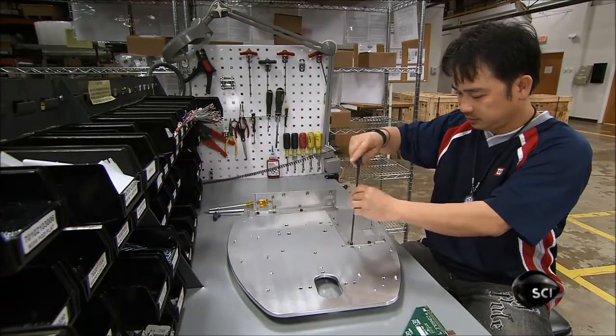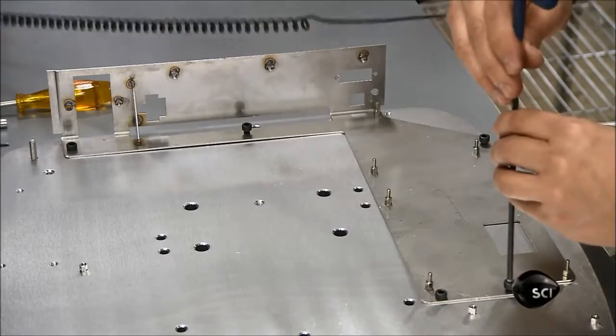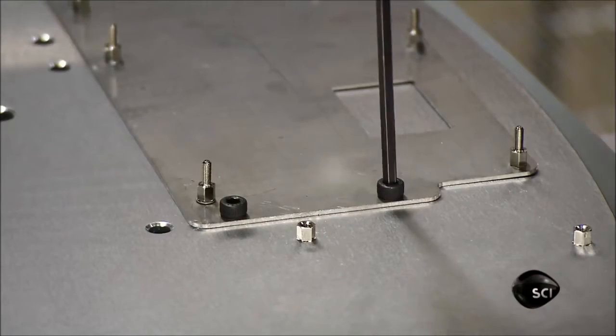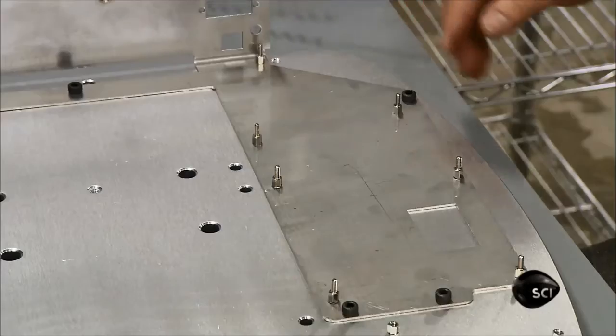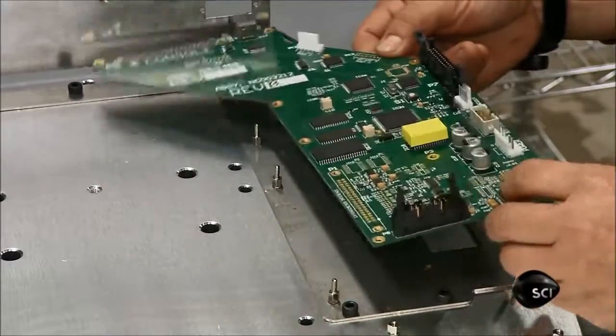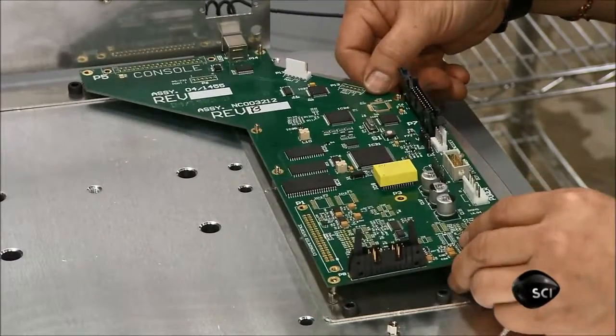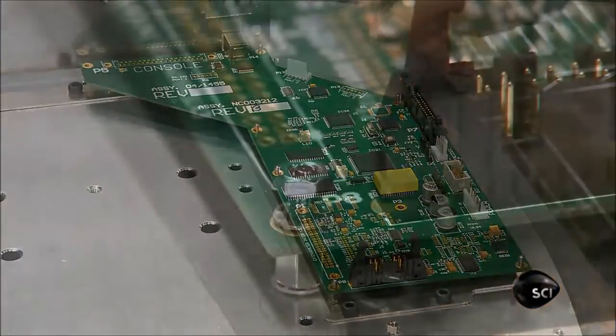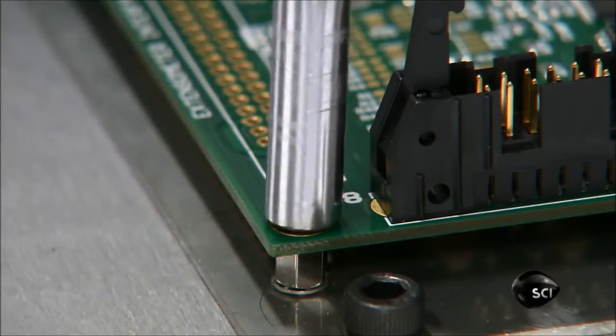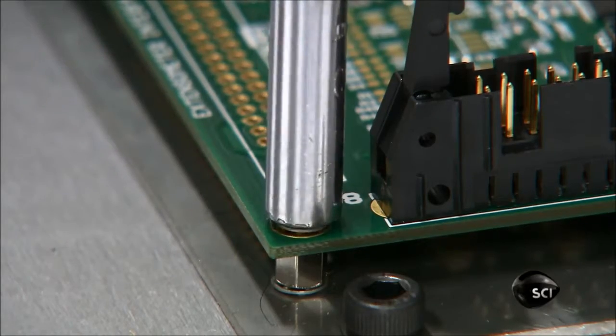Production starts with the steel base. The assembler screws brackets for the main computer board to it. He then installs the computer board using nuts called standoffs that raise it above the steel plate. This creates an air space between the two, preventing electrical shorting.